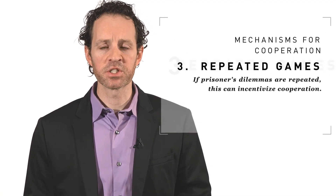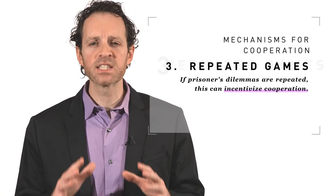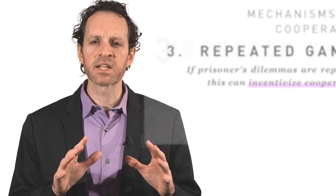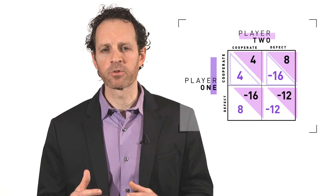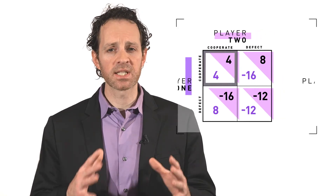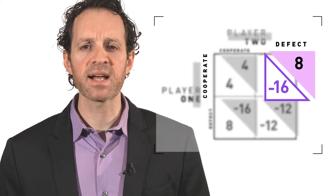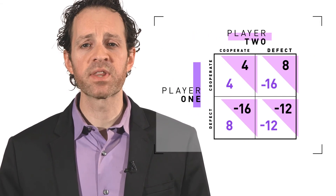A third mechanism is repeated games. If Prisoner's Dilemma situations are repeated instead of being one-time situations, this can incentivize cooperation through gains from repeated dealings. Repeated games can also be coupled with punishment mechanisms. One of the best known punishments in repeated games is tit for tat. Under this scenario, agents reciprocate the other player's actions. If player one selects cooperate and player two also selects cooperate, then cooperation by both parties continues in subsequent rounds. But if player one selects cooperate while player two selects defect, then player one responds in subsequent rounds with defect as punishment.